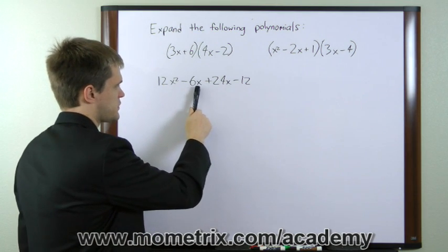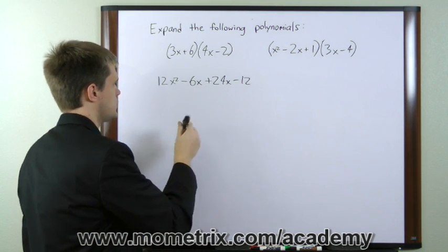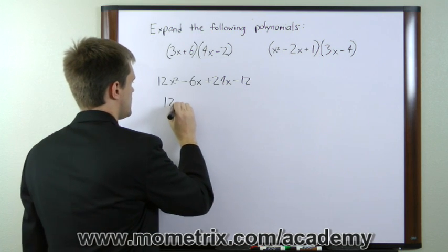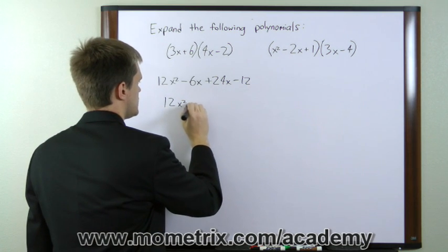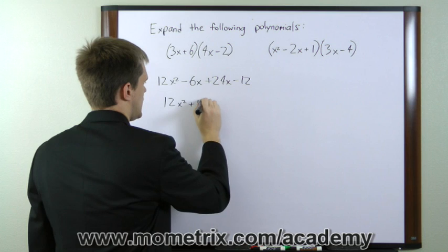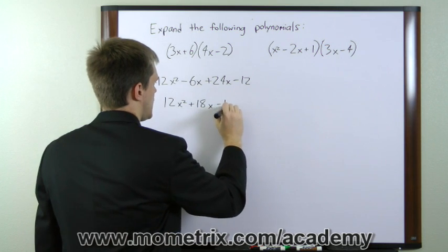We need to combine like terms. We have two x's here, so we'll go ahead and combine those. That gives us 12x squared plus 18x minus 12.